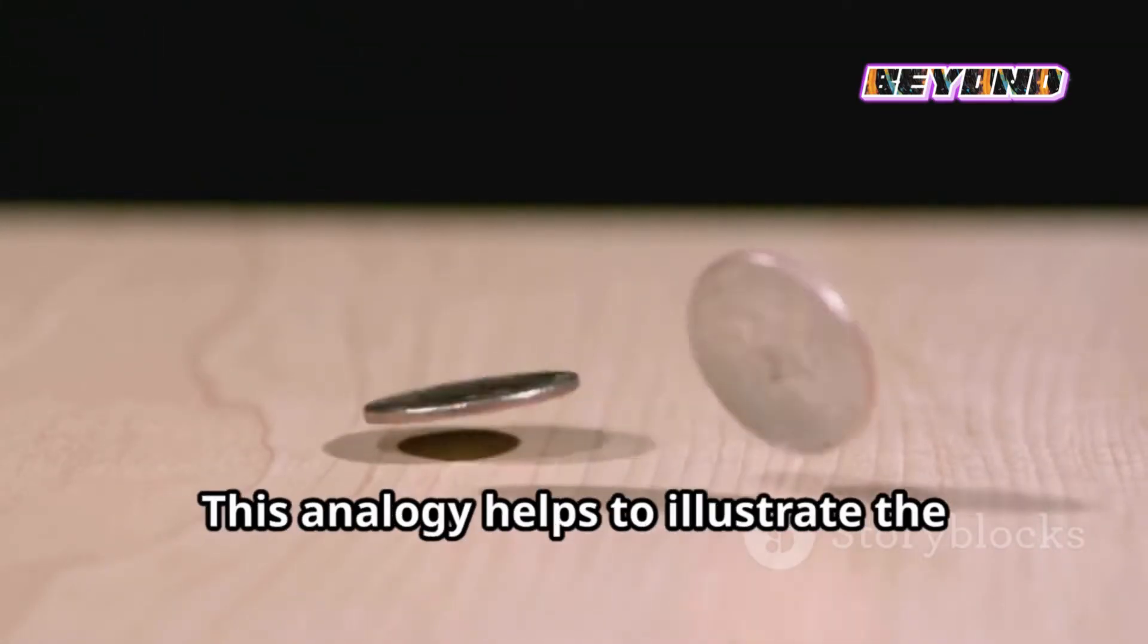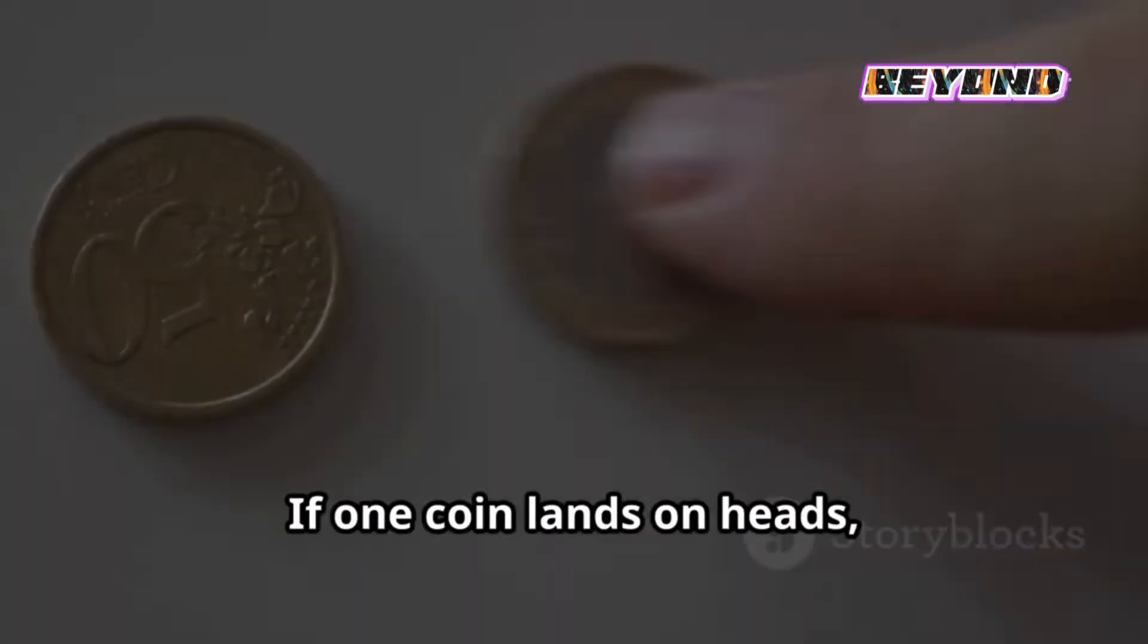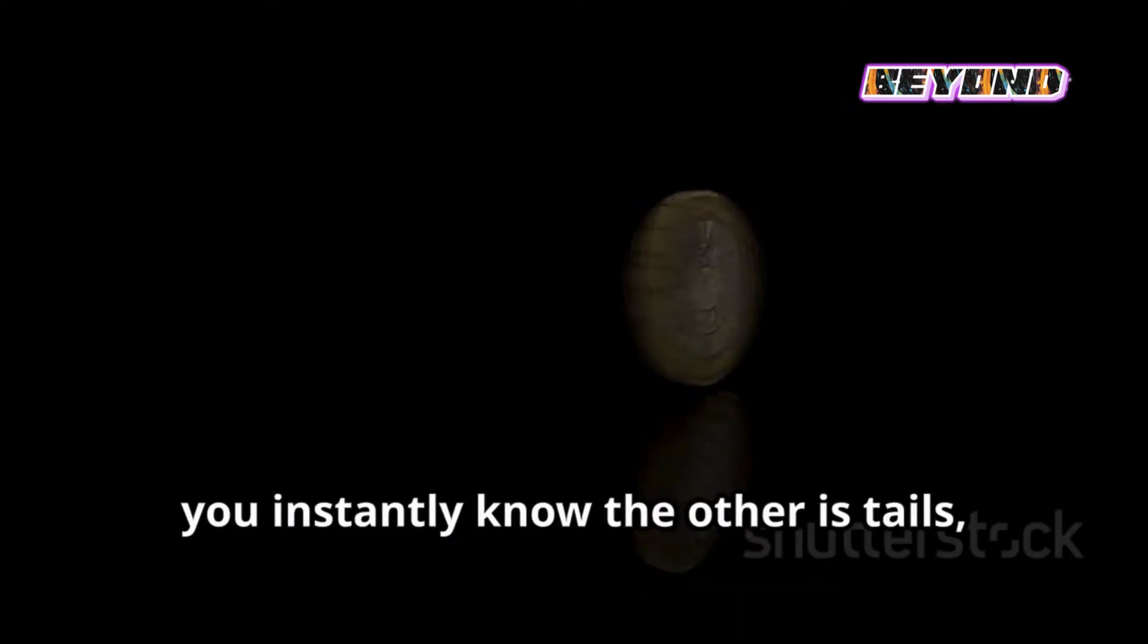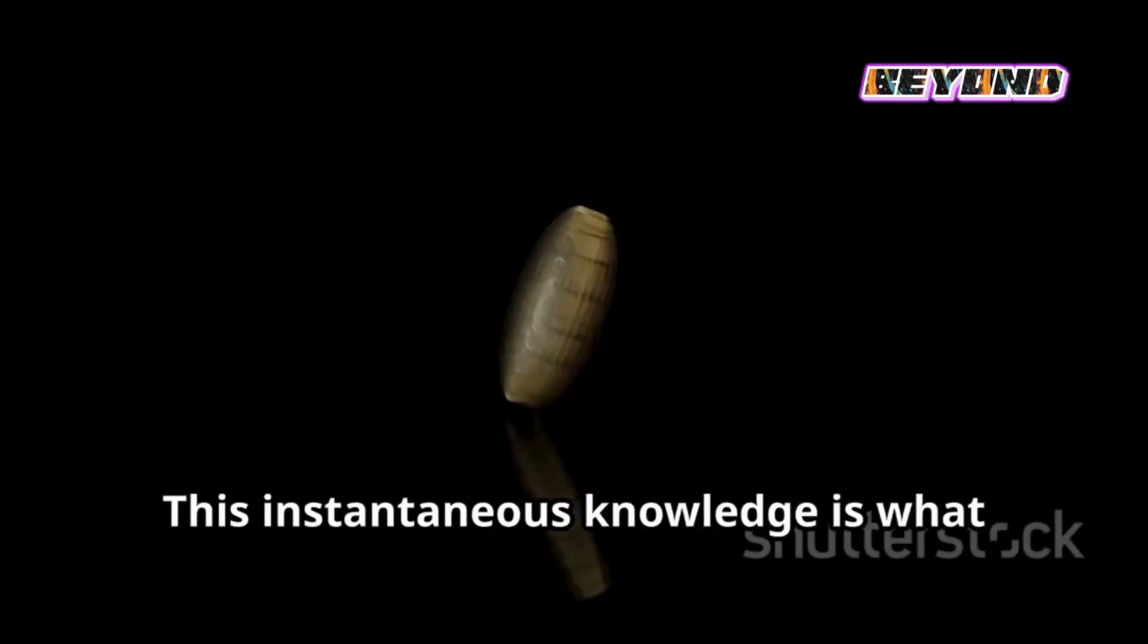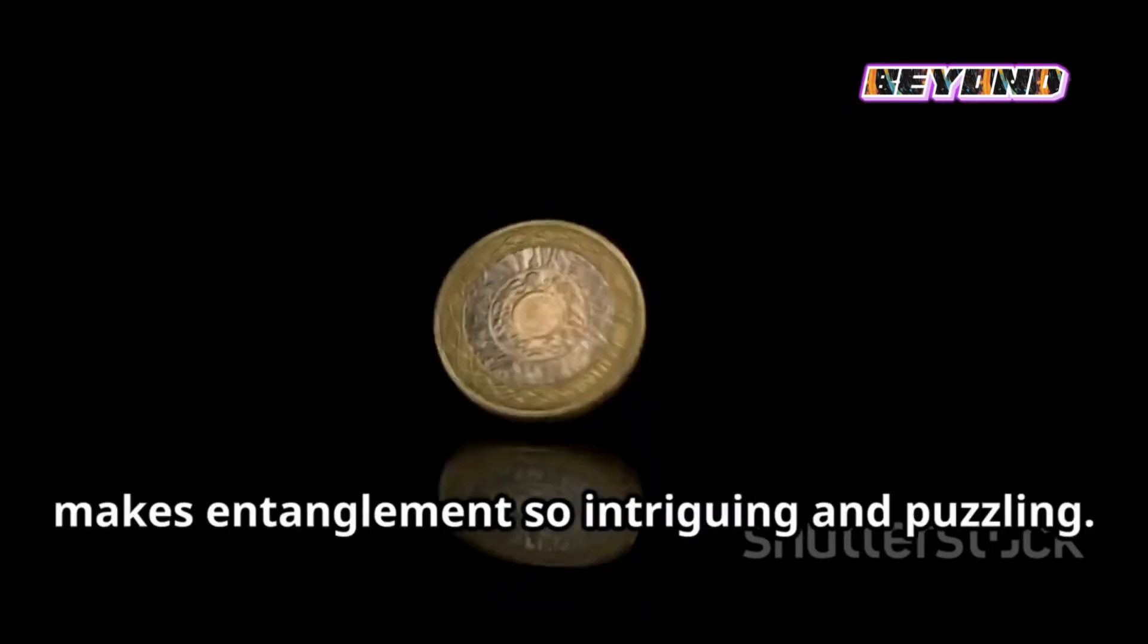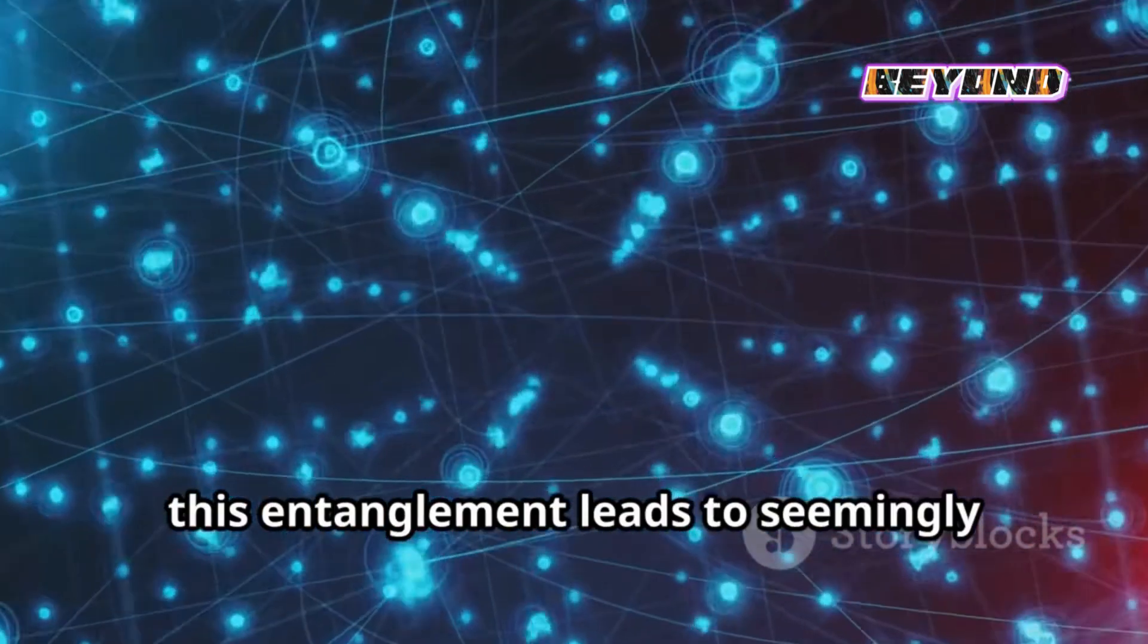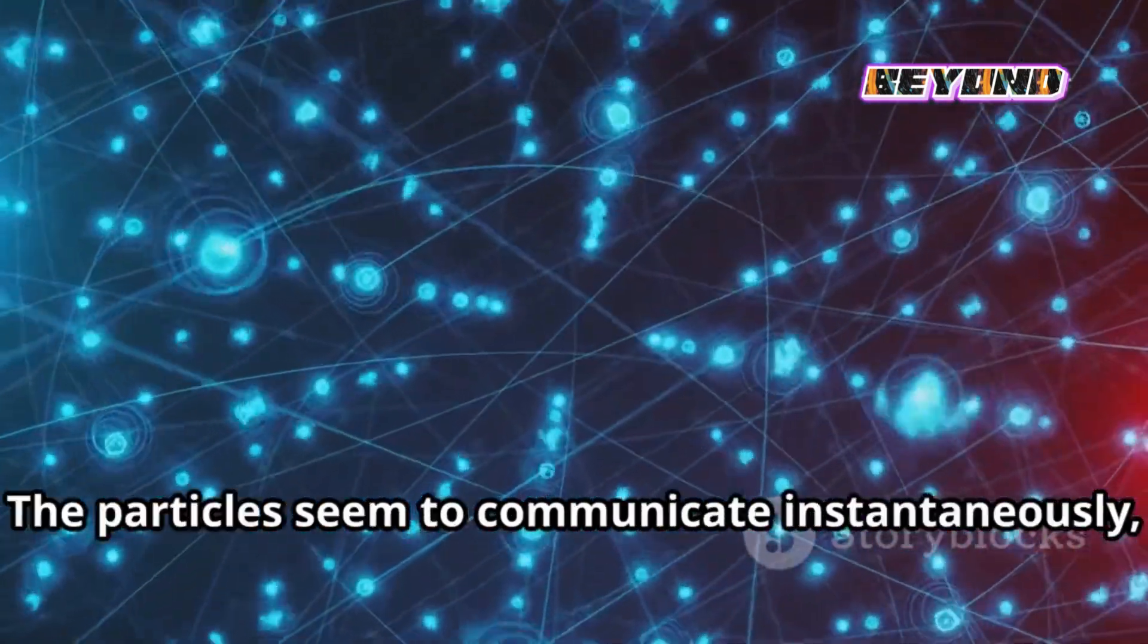Imagine two coins flipped simultaneously, guaranteed to land on opposite sides. This analogy helps to illustrate the concept of entanglement in a more tangible way. If one coin lands on heads, you instantly know the other is tails, even if they are miles apart. This instantaneous knowledge is what makes entanglement so intriguing and puzzling in the quantum world.